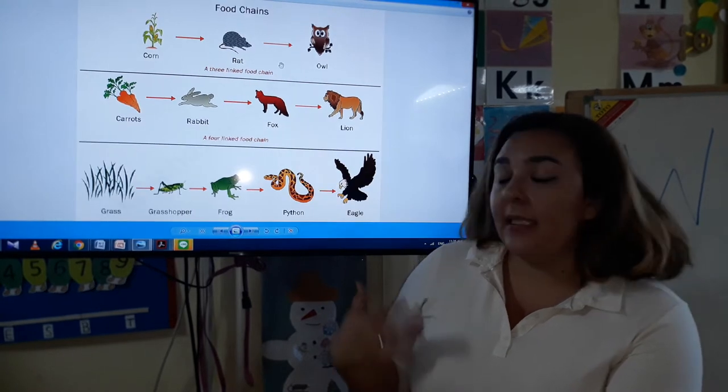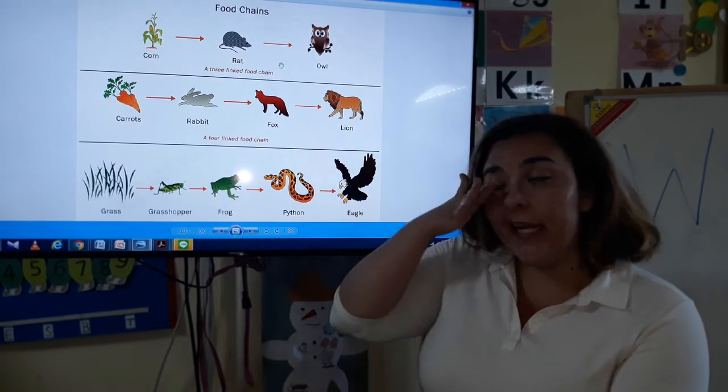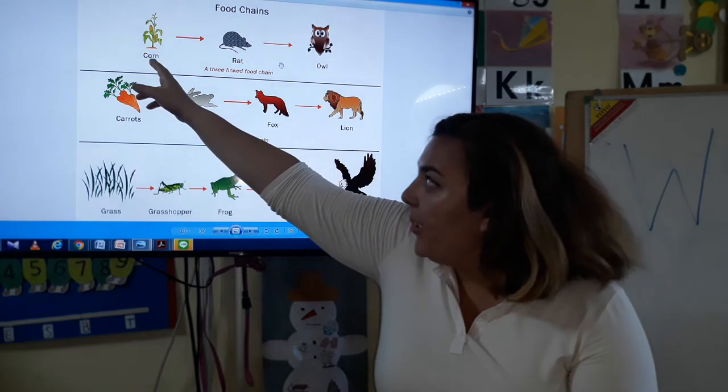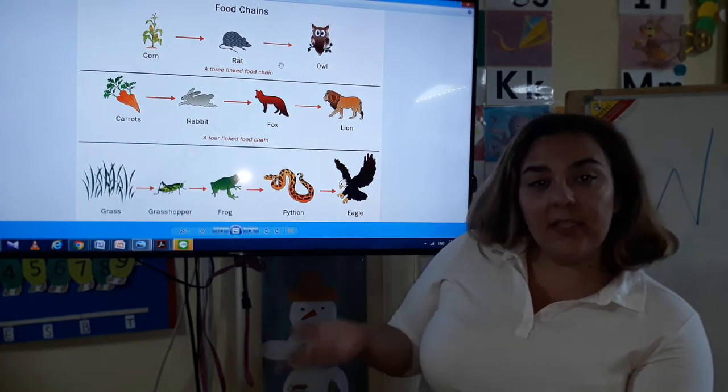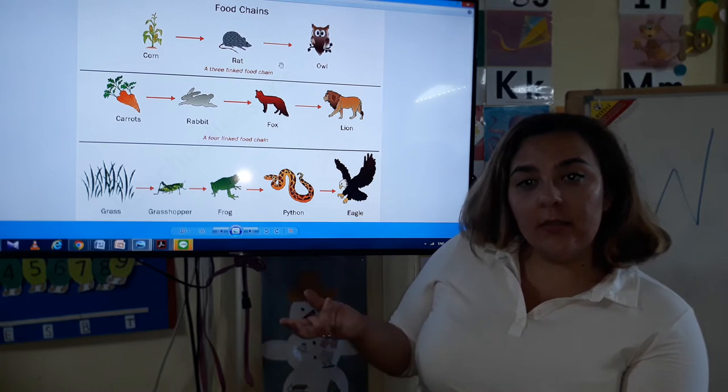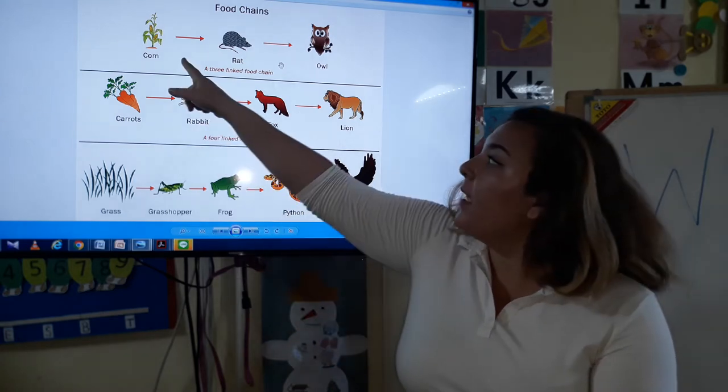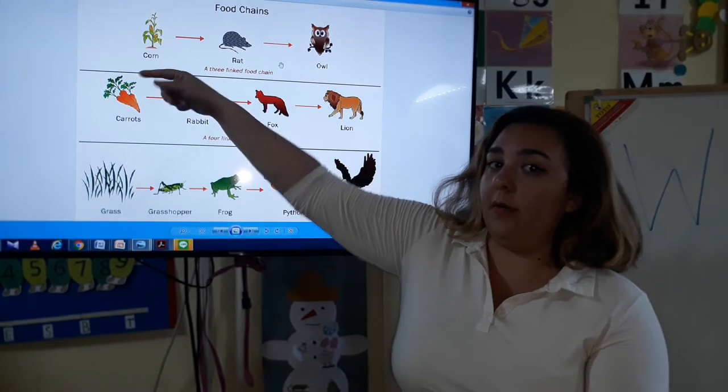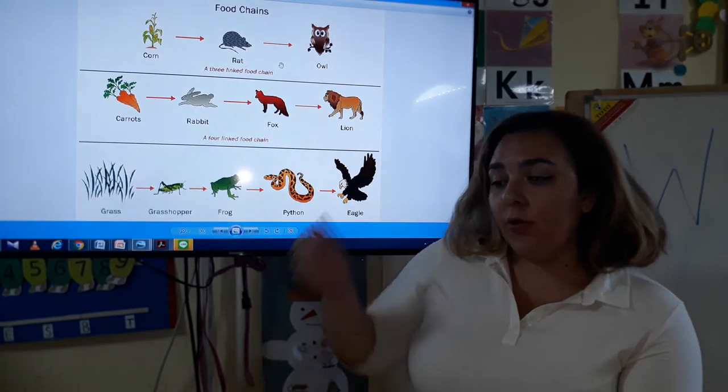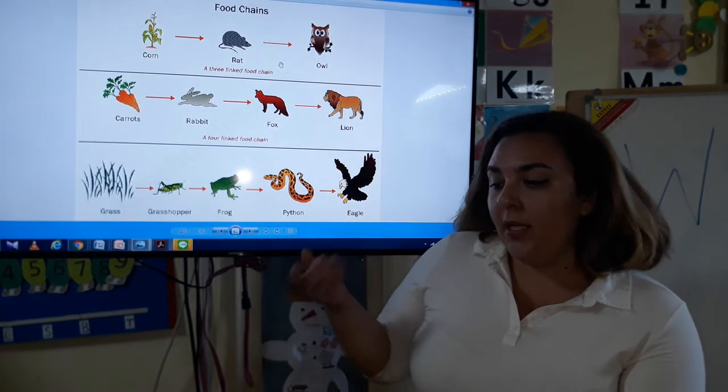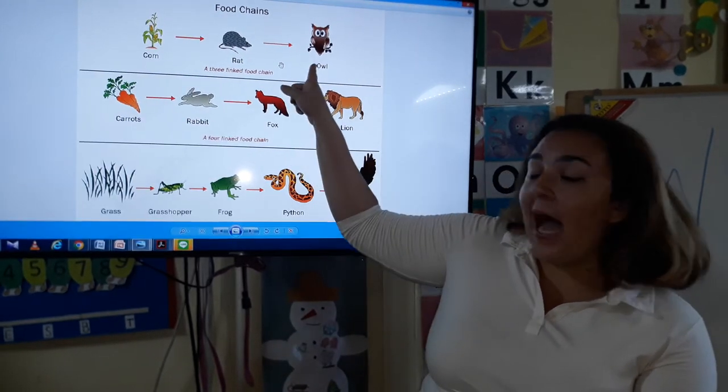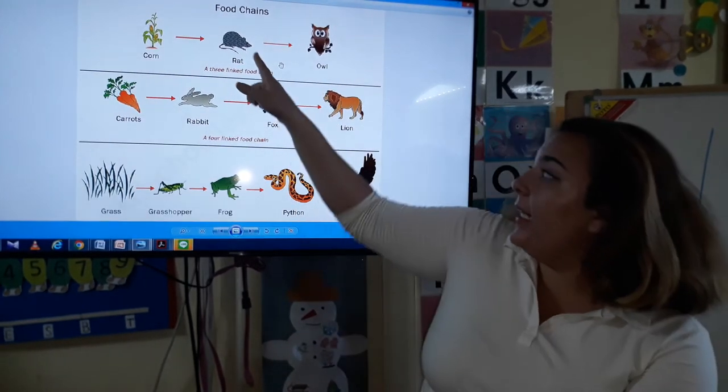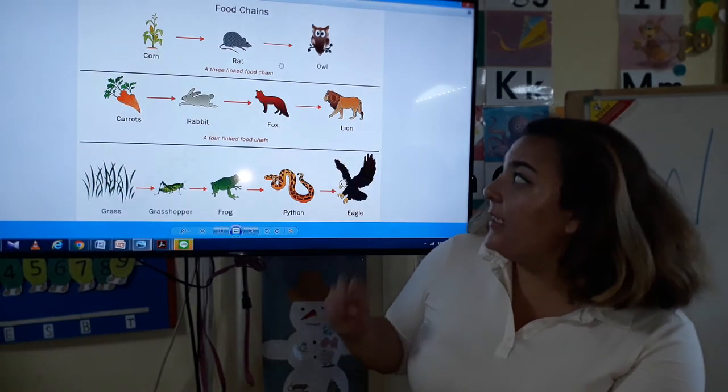The food chains in a simple way for you to understand. First up here you have corn. Corn is a vegetable that comes from the ground. Then rats eat the corn - rats normally eat vegetables, fruits, or anything they can find. Then the owl swoops in and eats the rat. That's a very simple food chain.